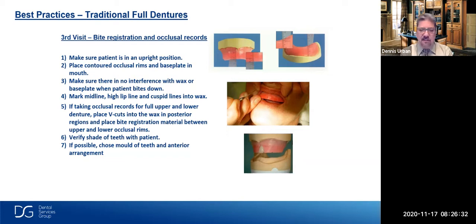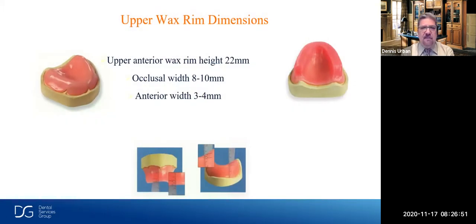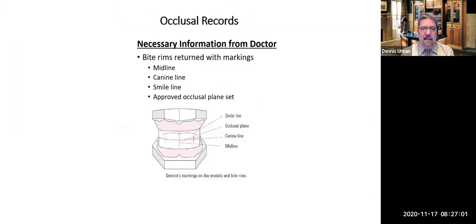The papillometer is an excellent tool that cuts down chair time by allowing us to contour the rims correctly before they're sent to you. On an average upper, the distance from the periphery to the incisal edge is about 22 millimeters; on a lower, about 18 millimeters. When taking occlusal records, we need the midline, cuspid lines, high lip line, and smile line — all carved into or marked on the occlusal rim. This information, for both analog and digital dentures, enables us to correctly set denture teeth and determine what size to use.